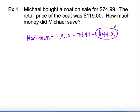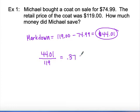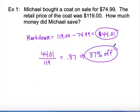We could also figure out what percentage that savings represents. To find the markdown rate, take the markdown and divide it by the original cost. That gives us about 0.37, meaning it was approximately 37% off — that would be the markdown rate.